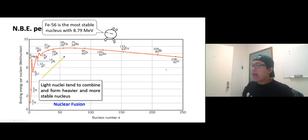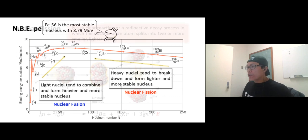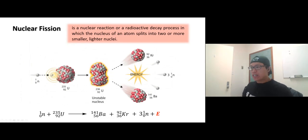Heavier nuclei can also gain stability by breaking down to smaller nuclei. This process we call nuclear fission. We're going to start talking about nuclear fission now.